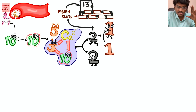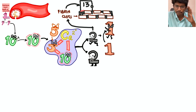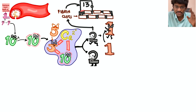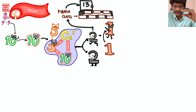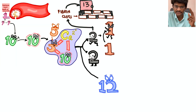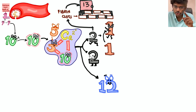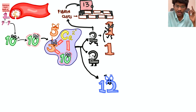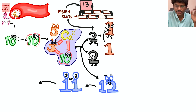Thrombin is the most important player because of its multiple functions. First, it converts fibrinogen to fibrin. Second, it activates factor 13, the fibrin stabilizing factor, which cross-links the fibrin clot like cementing bricks. Third, thrombin activates factor 12 into factor 12a — the beginning of the intrinsic pathway — and 12a converts factor 11 into 11a.